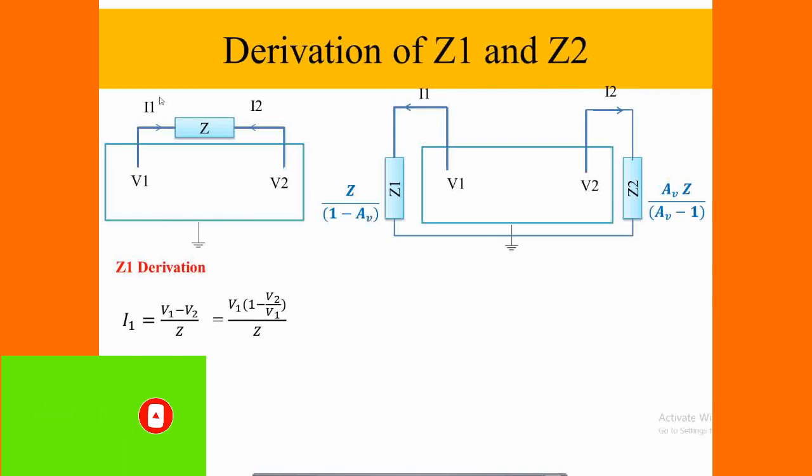We are going to be calculating the current I1, which is the voltage difference V1 minus V2 by Z. Take out the V1 as a common term, and the equation is going to be modified as 1 minus V2 by V1, which is by Z.